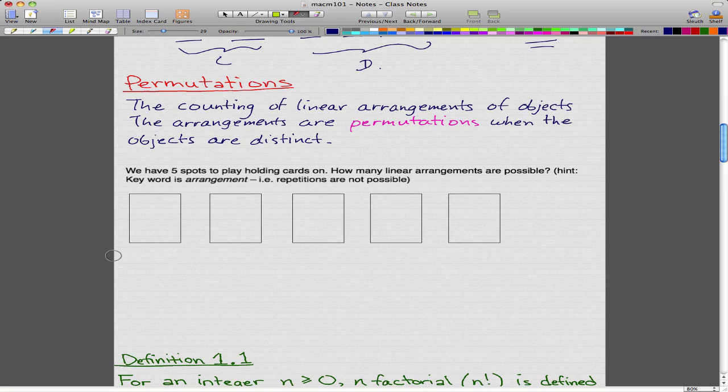We'll refer back to what we did in the past videos. Let's say that we have five spots to hold playing cards on. Here's our five spots represented by these rectangles. How many linear arrangements are possible? The hint here is the key word is arrangement, which means that repetitions are not possible.